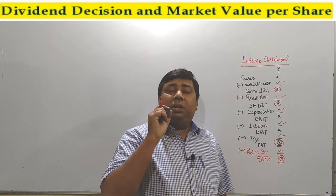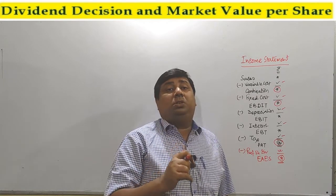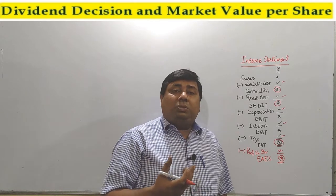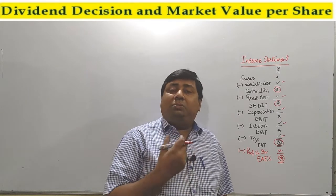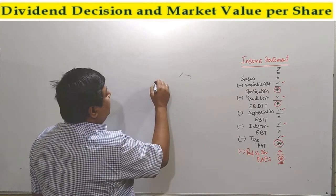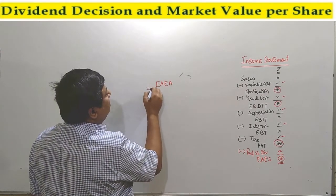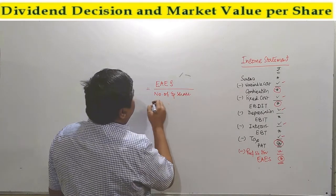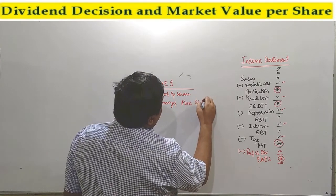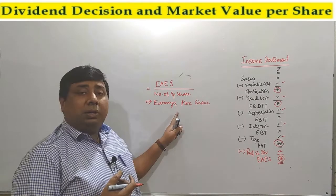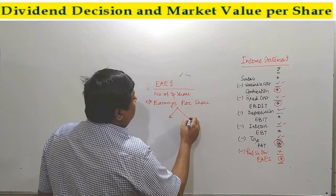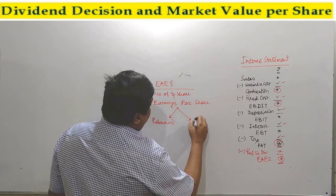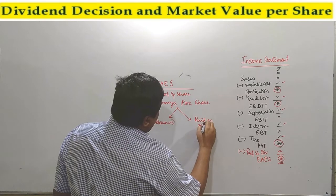After paying the preference shareholders' dividend from PAT, the amount which is available exclusively for equity shareholders is known as EAEs — the amount exclusively available to equity shareholders at the end of the year. It is a profit based on how the business was organized throughout the year. If we divide EAEs — Earnings Available to Equity Shareholders — by the number of equity shares, we get Earnings Per Share. The key concept is how much the company retained in the business and how much the company paid as a dividend.